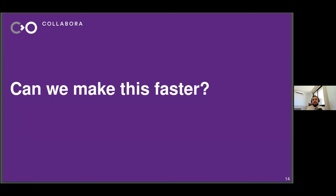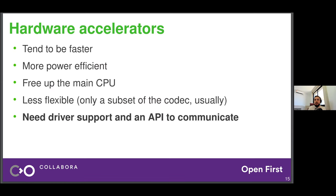So, can we make this faster? Because we're human beings — we like faster stuff, we like performance, especially in a world of mobile and battery-operated devices. And yes, we can make it faster through hardware accelerators. By using hardware accelerators, we can implement encoding and decoding in hardware, be more power efficient, and have the main CPU idling for longer since the actual encoding or decoding takes place in dedicated hardware.